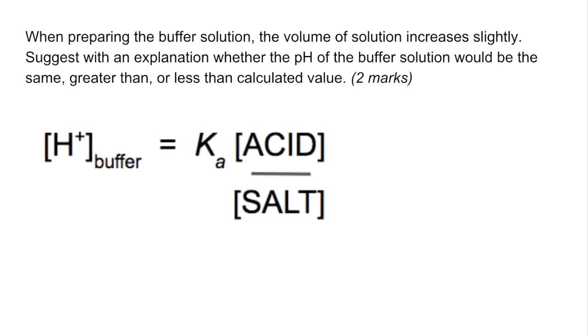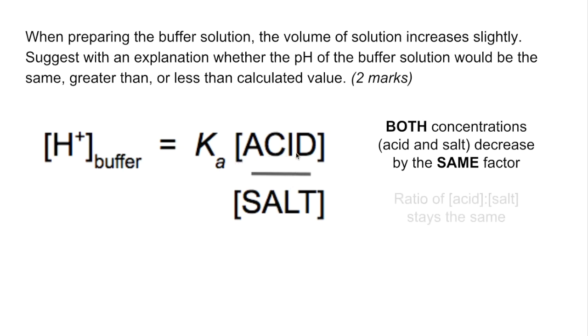So we'll put the cacid over salt expression back on the screen there. If you think about it, if the volume increases slightly, everything's in that volume - the acid and the salt - so their concentrations are both going to change by the same factor. So because of that, this ratio of acid to salt is not actually going to change. And therefore, the knock-on effect is the H⁺ concentration of the buffer, and therefore the pH, is going to stay the same.